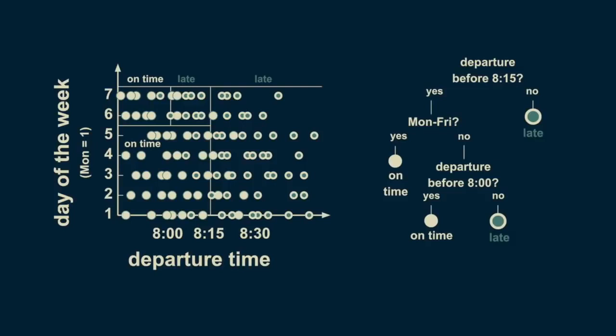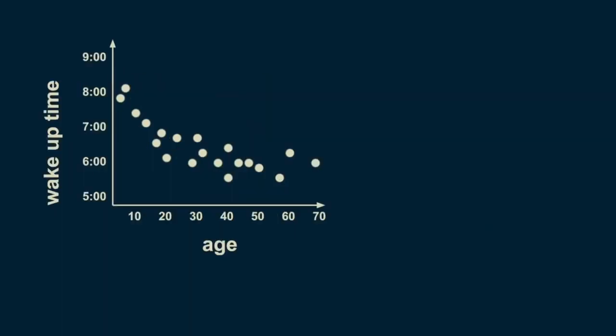Now we can look at an example with a continuous target variable rather than a categorical one. When a model is used to make predictions about continuous numerical variables, it's also called a regression tree. So far we've looked at one- and two-dimensional classification trees; now we'll look at regression trees.